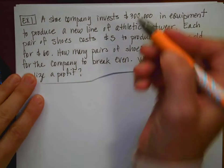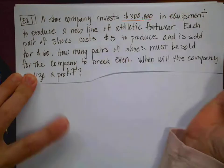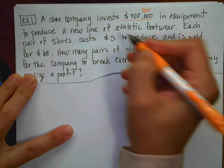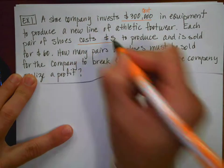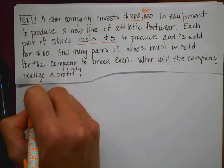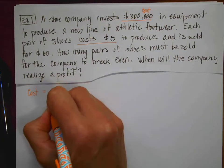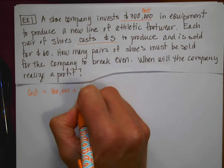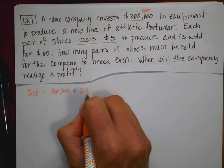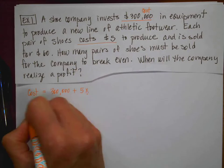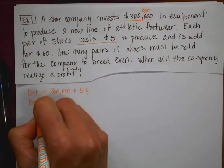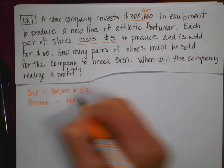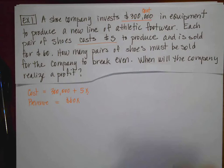A couple of things that are important to notice. I'm going to invest $300,000. So that is a cost. And it costs $5 to produce. So if I wrote my cost function, it would have a y-intercept of $300,000 and it's going to cost me $5 to produce every pair of shoes. My revenue is going to equal $60 for every pair of shoes that I sell.